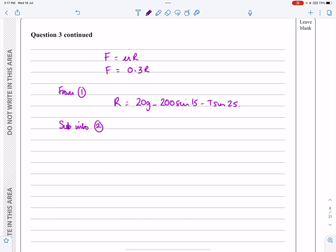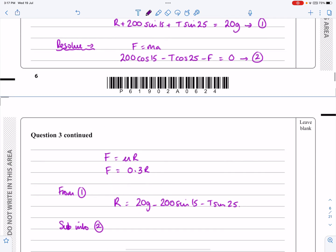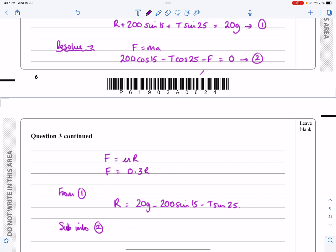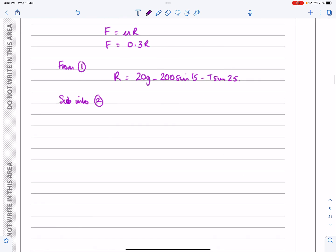number two there at the same time realising that that F is 0.3 lots of R so it's if F is 0.3 lots of R that's going to be right got to be careful let's give myself enough space to do this this is 200 cos 15